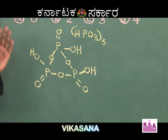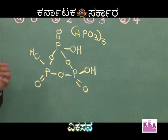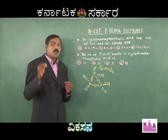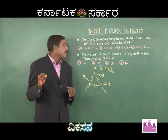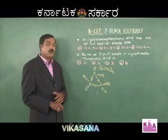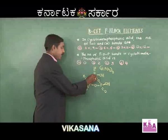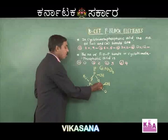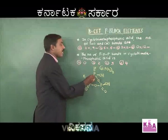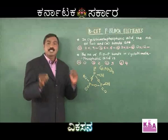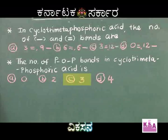Looking at the question on the number of P-O-P bonds in cyclotrimetaphosphoric acid: I count them — one, two and three. The number of P-O-P bonds is three. My answer is option C, which has three P-O-P bonds. Hope you have understood this.